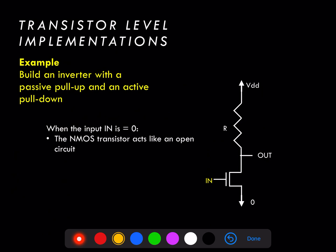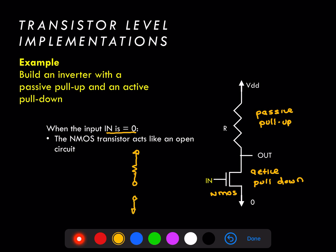Let's take a look at the simplest transistor level implementation — the inverter. Here we show an inverter constructed with a passive pull-up device, the resistor, and an active pull-down device, the NMOS transistor. When the input is equal to zero, the NMOS transistor turns into an open circuit. We replace the NMOS transistor with an open circuit and the output is now pulled up to the power supply VDD, becoming a one in digital terms.